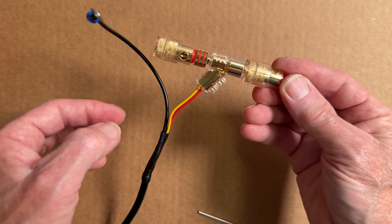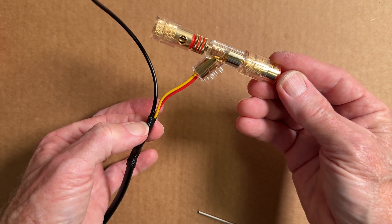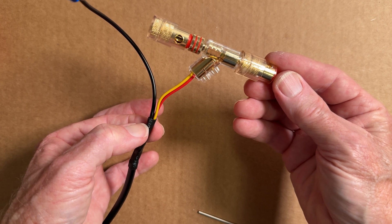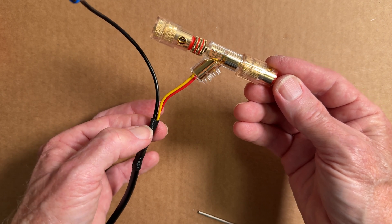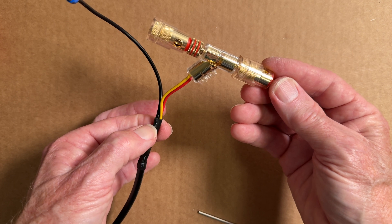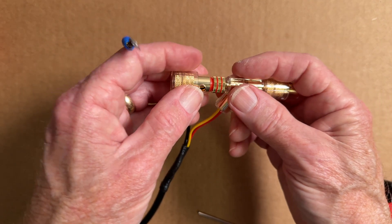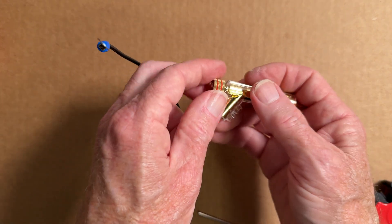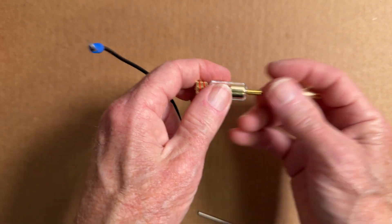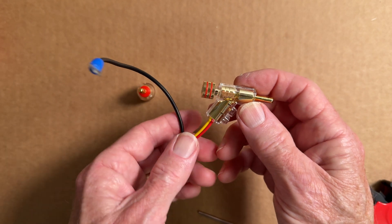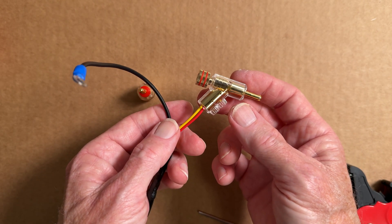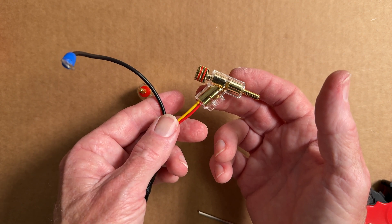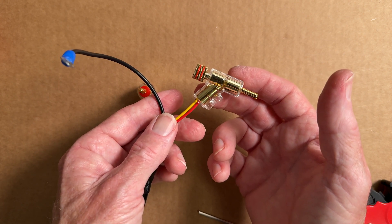My wire is now shielded from here all the way to the subwoofer. This eliminates all of the hum and buzz and interference that I was experiencing previously. All I had to do was get rid of the REL wire and use a shielded wire. It's a mystery to me why REL doesn't include a shielded wire with their subwoofers, but it's an easy fix. I think I spent about $30 on 30 feet of wire, so it's a cheap fix.